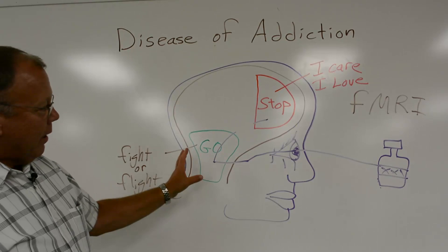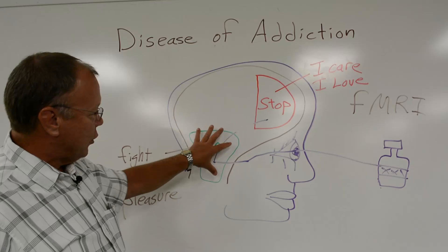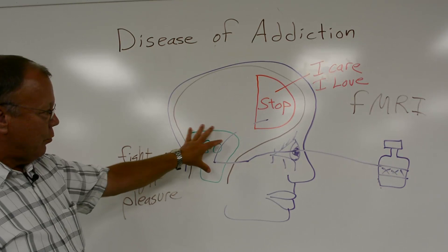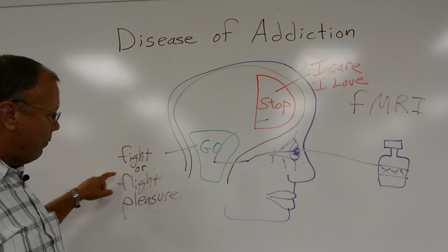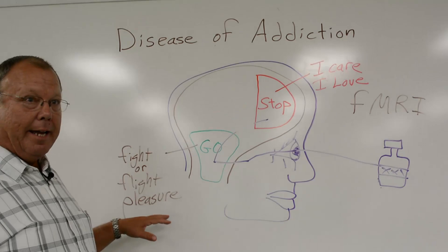This is a diagram of the human brain — a very rudimentary diagram. In the base of the brain is a survival part of the brain. What happens in this part of the brain are all the functions we need to survive: fight or flight, pleasure — that includes sex, that includes getting high. That all happens down here.